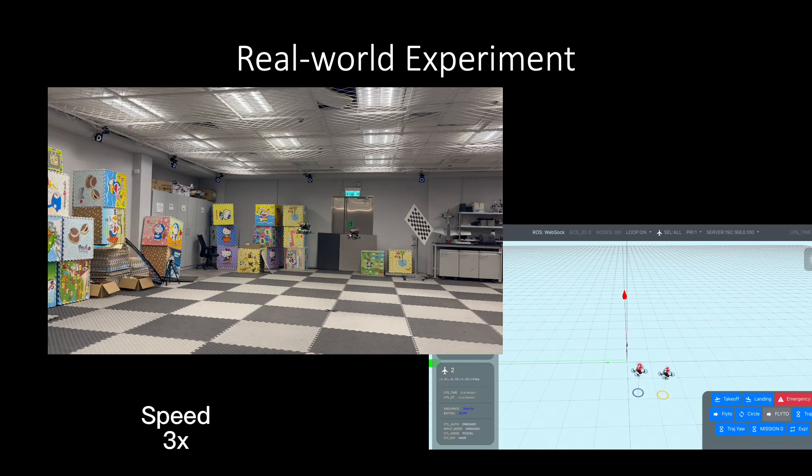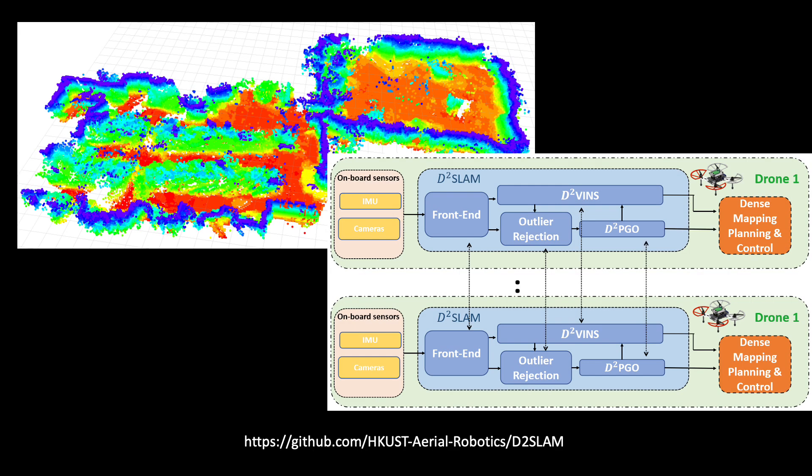In conclusion, in this video we introduce D-Square Slam, which contains D-Square VINS for accurate local and relative localization and D-Square PGO for global consistent trajectory estimation.